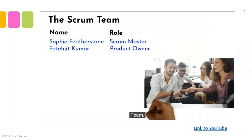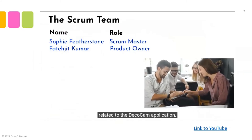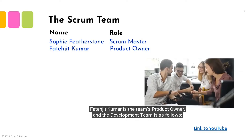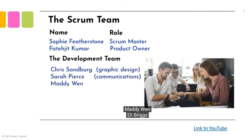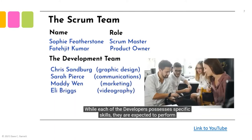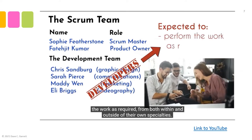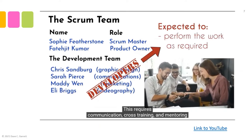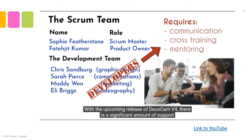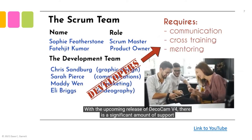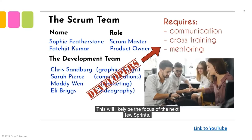Sophie has recently been appointed scrum master for the Deco Cam product support team. This team is responsible for the development and delivery of product support related to the Deco Cam application. Fadijit Kamar is the team's product owner, and the development team consists of Chris Sandberg, Sarah Pierce, Maddie Wen, and Eli Briggs. While each developer possesses specific skills, they are expected to perform work from both within and outside their specialties, requiring cross-training and mentoring. With the upcoming release of Deco Cam version 4, there is a significant amount of support required for the product launch, which will likely be the focus of the next few sprints.